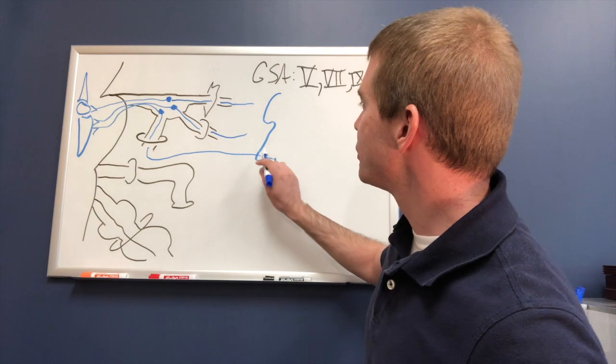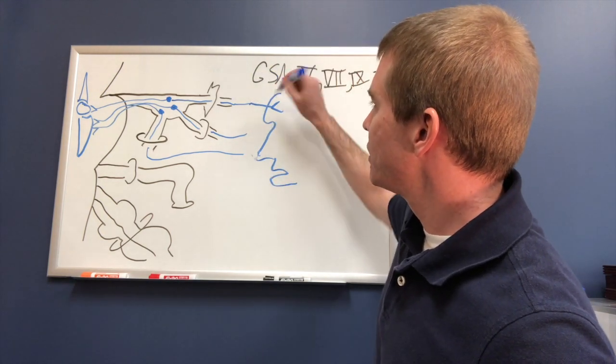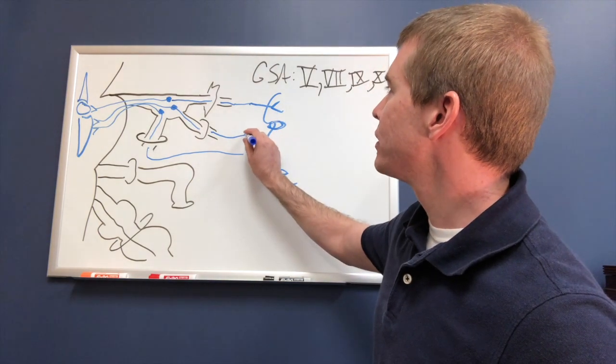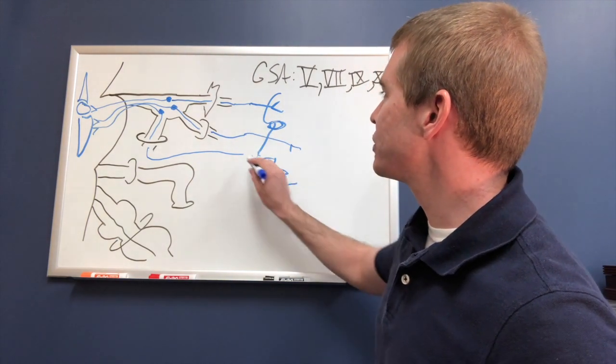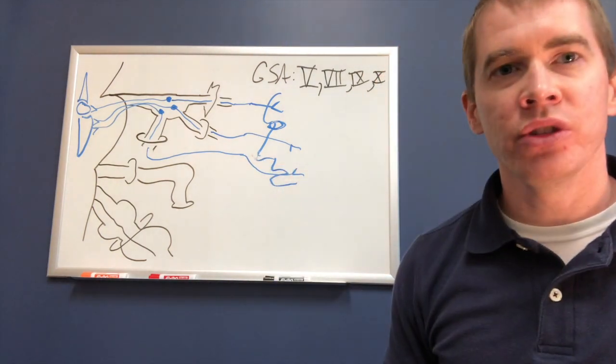Here we have a forehead with a very big brow, a nose, and a mouth. The ophthalmic supplies the forehead. There's the eye. We have the maxillary portion being supplied by the maxillary division and the mandibular division going to the jaw.